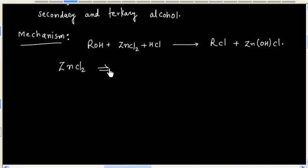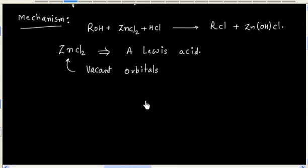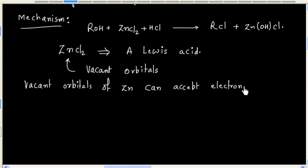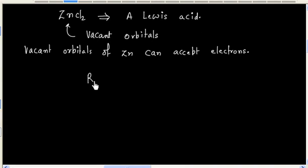ZnCl2 is a Lewis acid. Zinc has vacant orbitals that can accept electrons. Alcohol can act as a Lewis base, and this is because oxygen has lone pair of electrons.